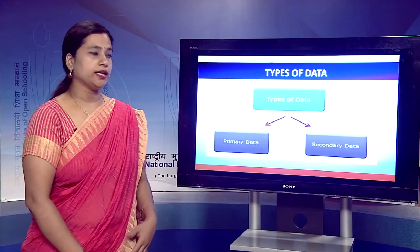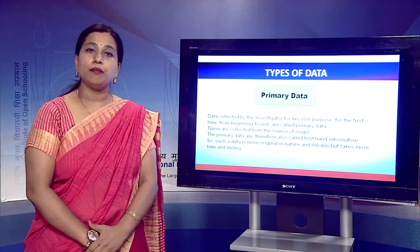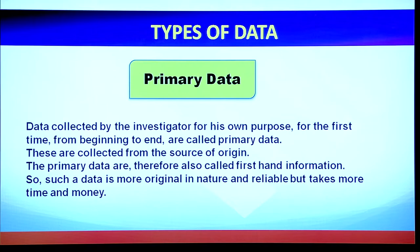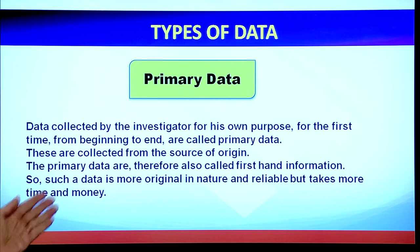What is primary data? Primary data is such data which is collected by the investigator for his own purpose for the first time, from the very beginning to end. It is collected from the source of origin, and that is why it is also called first-hand information. Such data is more original in nature, more reliable, but takes more time and money.